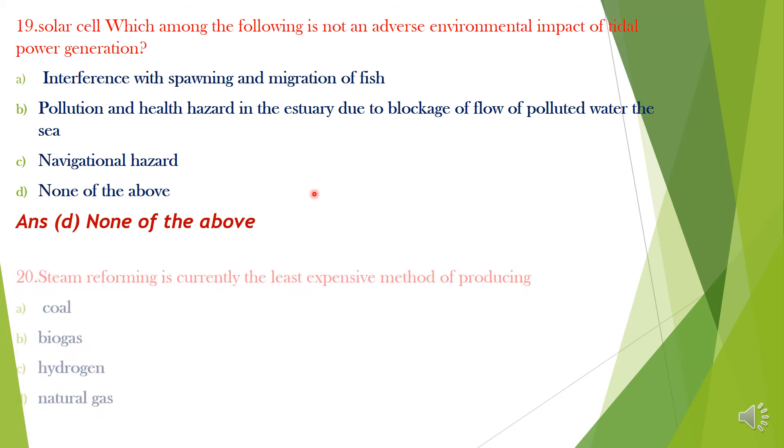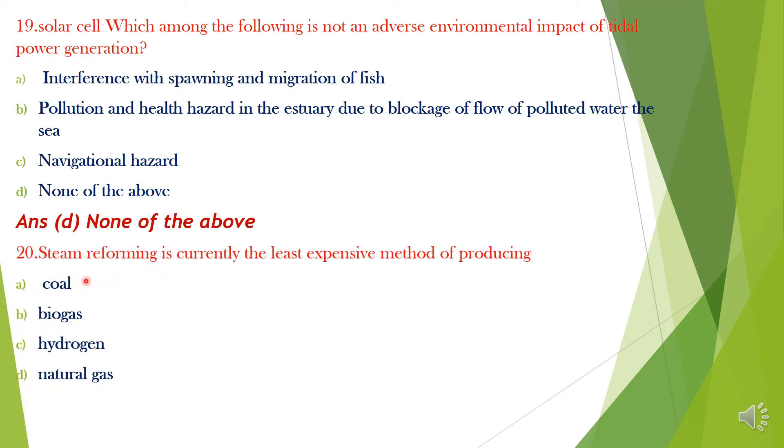Question 20. Steam reforming is currently the least expensive method of producing: A. Coal, B. Biogas, C. Hydrogen, D. Natural gas. Answer is Option C, Hydrogen.